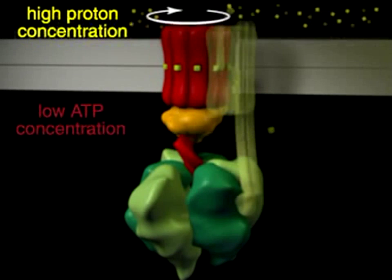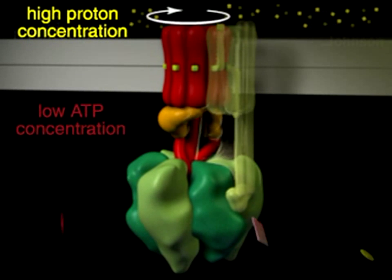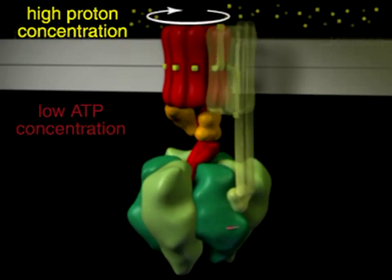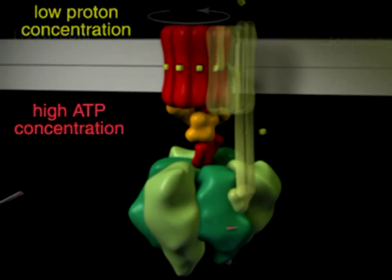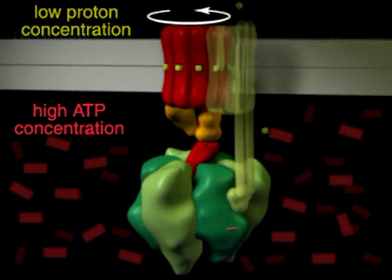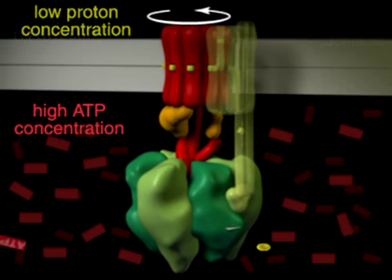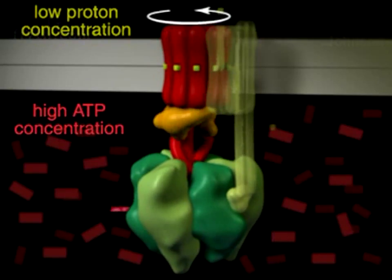Like any enzyme, ATP synthase can work in either direction. If the concentration of ATP is high and the proton gradient low, ATP synthase will run in reverse, hydrolyzing ATP as it pumps protons across the membrane.